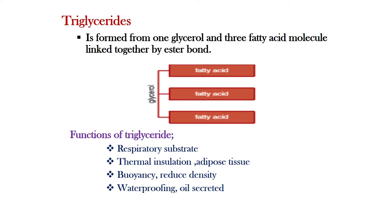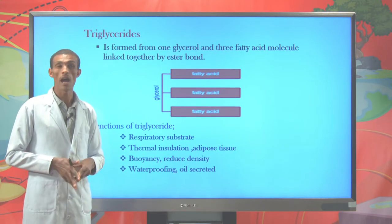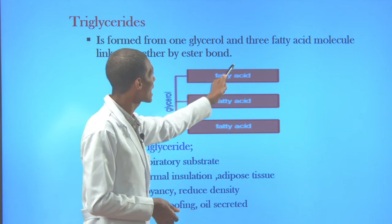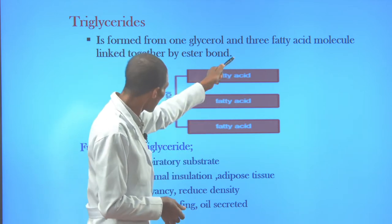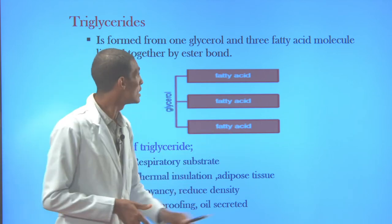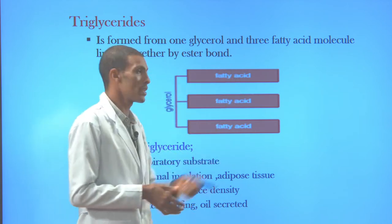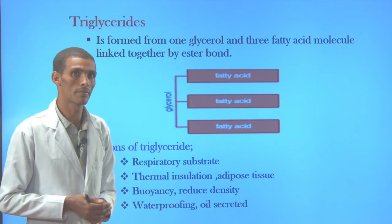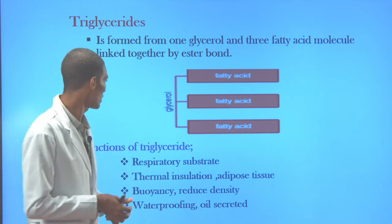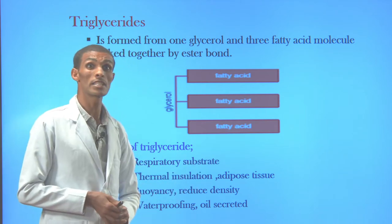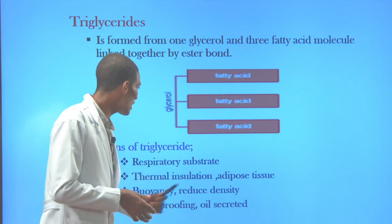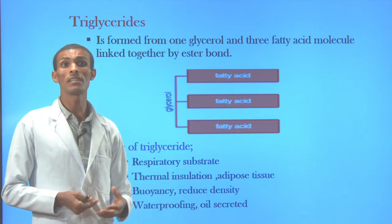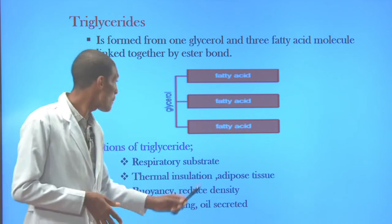Let's see the structure of triglyceride. A triglyceride is an important lipid formed when one glycerol — the alcohol part — and three fatty acids — long chain hydrocarbons with an acidic carboxyl group — become joined together by ester bonds. Triglyceride is very important in releasing energy during the respiratory process, so it is considered a respiratory substrate just like carbohydrates. It also acts as thermal insulation.